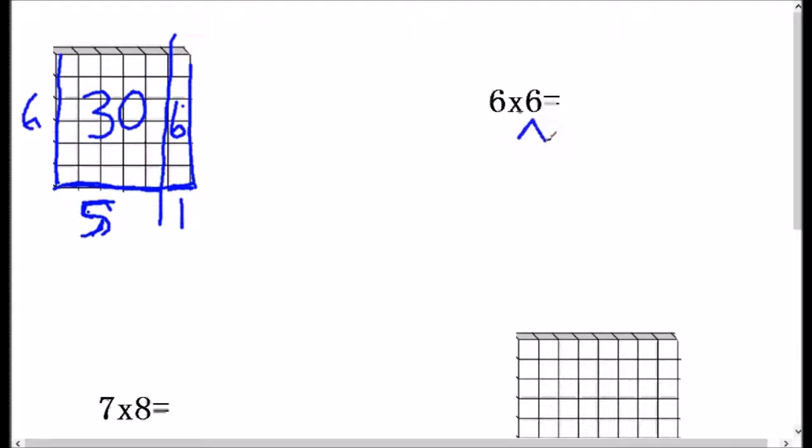So basically, 6 times 5 plus 6 times 1. Now written out like this, it might actually look even more difficult than how it originally looked. But remember, 6 times 5 is 30, and 6 times 1 is 6. And so that gives us 36.